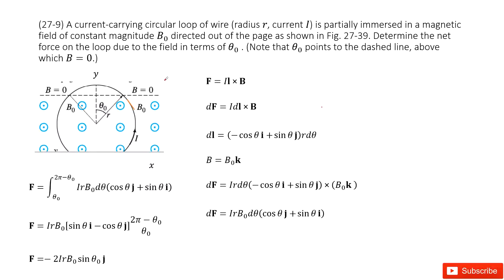Welcome to my channel. I'm Zhang Jingxu. Let's look at problem 9 in chapter 27. Chapter 27 is about magnetism. We need to calculate the magnetic force on a current-carrying circular loop of wire.